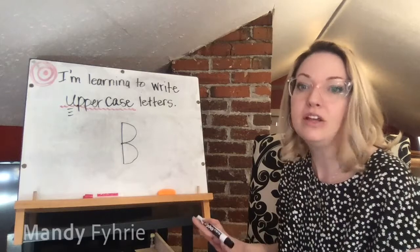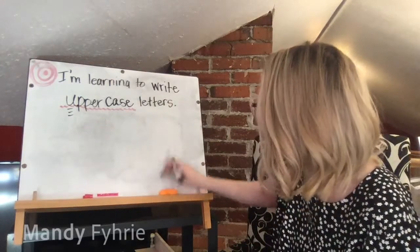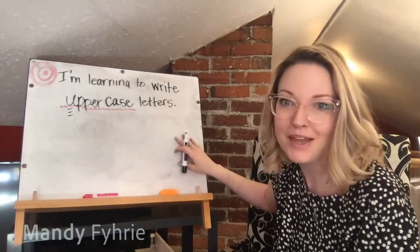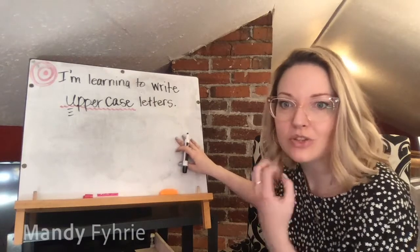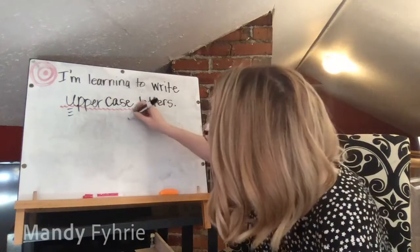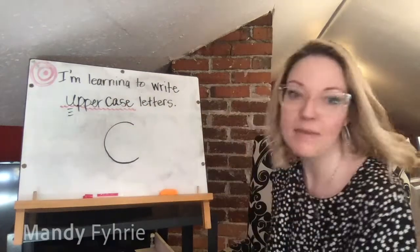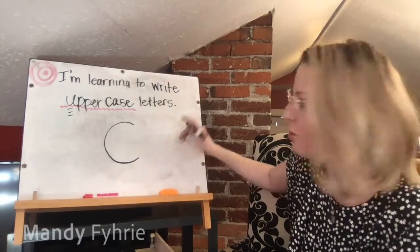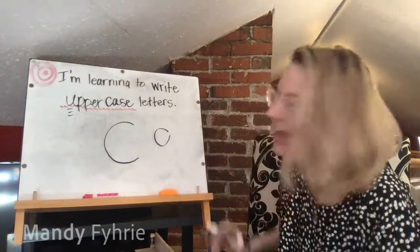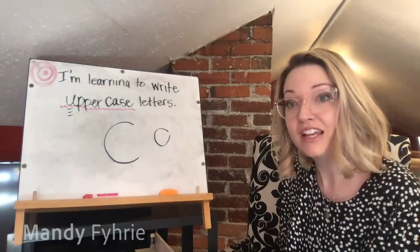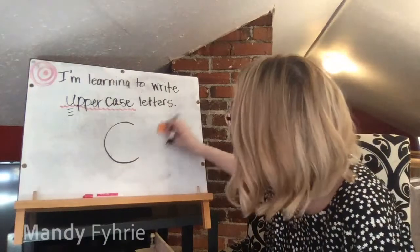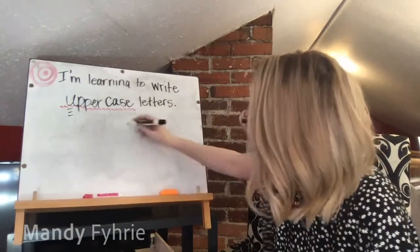Letter C is one big curve — that's it. We start at the top, and remember we want the opening to face right, like Pac-Man with his mouth open. We always move from left to right when we write. Make sure it's got a nice big mouth opening, otherwise I might think it's the letter O. Big curve with a wide opening.